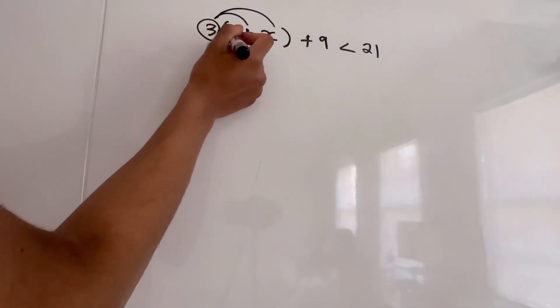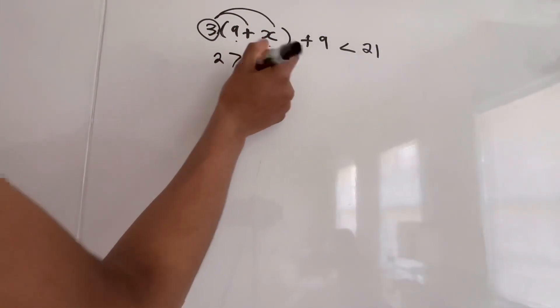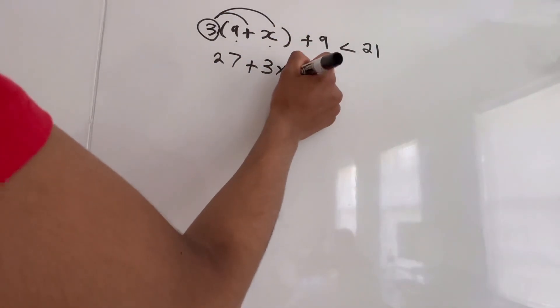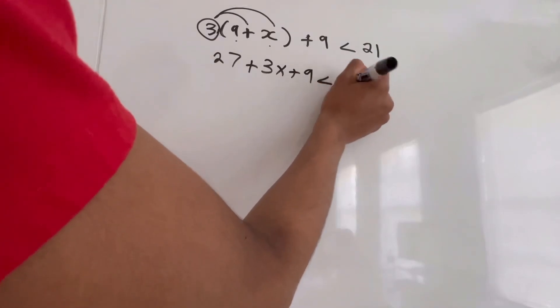So we're going to multiply 3 with 9 and 3 with x. So 3 times 9, that's 27, plus 3 times x, that's 3x. And we add this with 9 is less than 21.